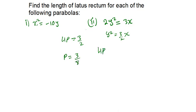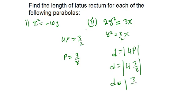The distance equals the absolute value of 4p. So 4 times our p, which is 3 over 8. What we get, our d equals the absolute value of 3 over 2.